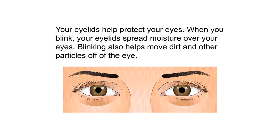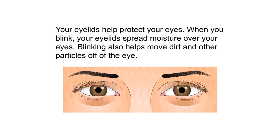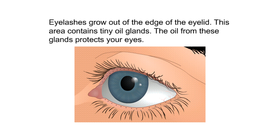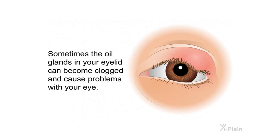Your eyelids help protect your eyes. When you blink, your eyelids spread moisture over your eyes. Blinking also helps move dirt and other particles off of the eye. Eyelashes grow out of the edge of the eyelid, and this area contains tiny oil glands. The oil from these glands protects your eyes. Sometimes the oil glands in your eyelid can become clogged and cause problems with your eye.